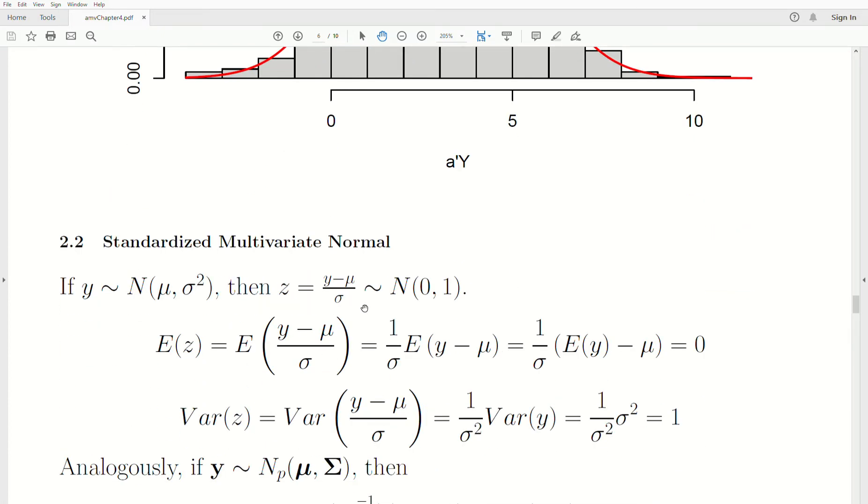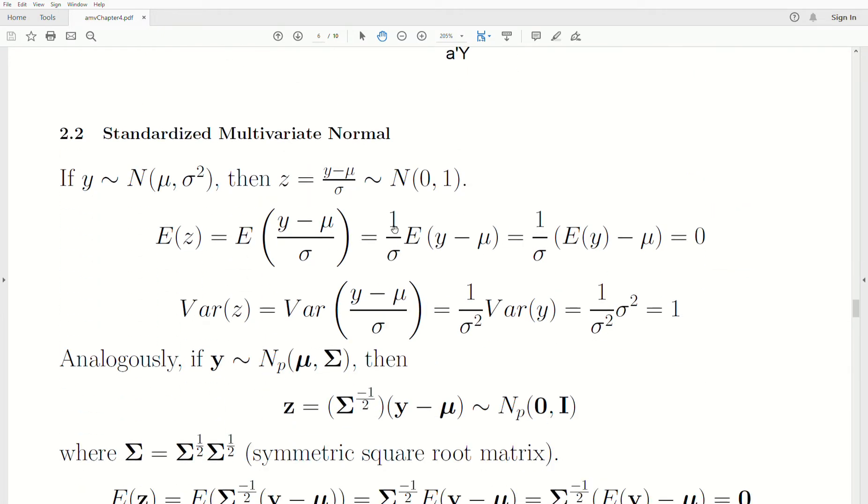Now let's look at standardized multivariate normal. Standardized means mean 0, variance is 1, covariance is 0. So if Y is a normal distribution, so that's one variable, mean mu, variance sigma squared, then this transformation, Y minus mu divided by the standard deviation, creates what we call a Z-score, Z-variable. But it's a standard normal, which is mean 0, variance 1.